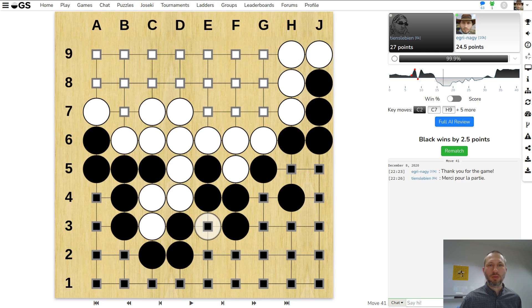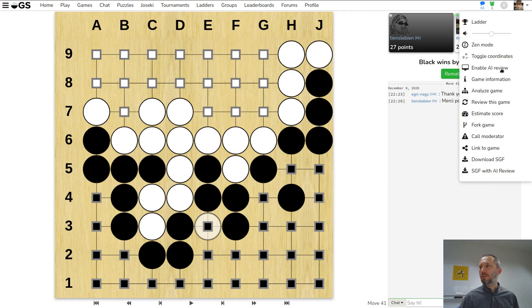Hello, this is a short explanation of how to use the AI review on the Online Go Server. So here's a game that I played and lost, and now I will use the built-in AI review to figure out what went wrong. First of all, if you don't see this graph, that means the AI review is disabled and you can enable it this way.